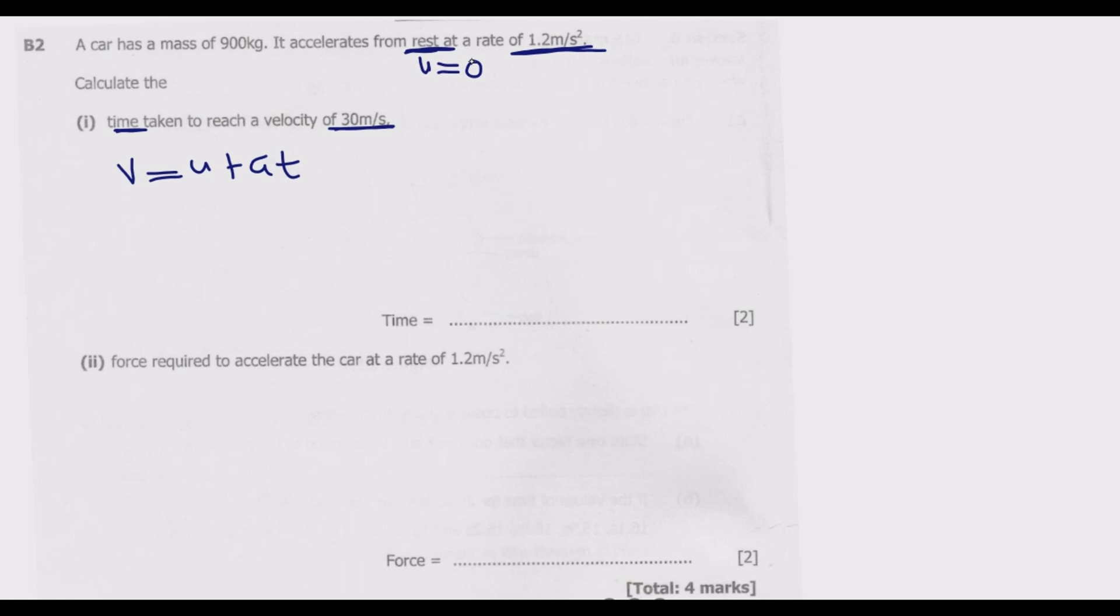The facts that we know: we are looking for time, we know final velocity is 30 meters per second, then we know initial velocity is equal to zero meters per second.